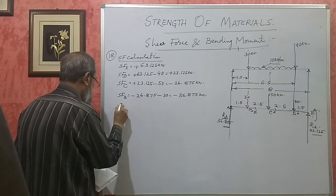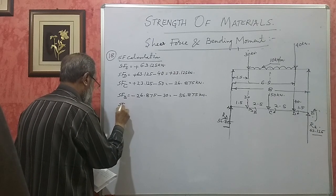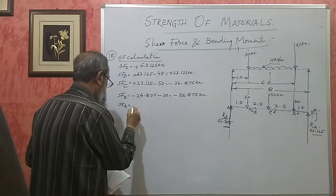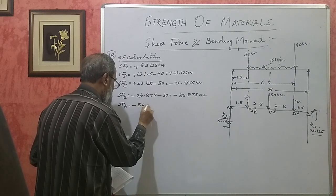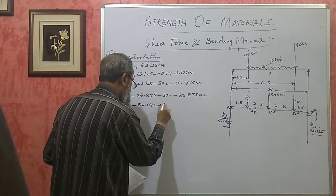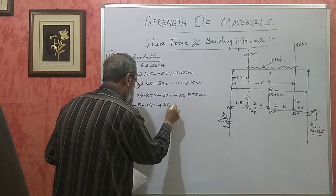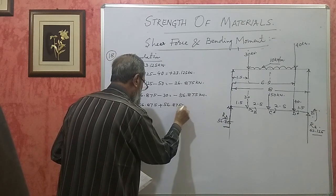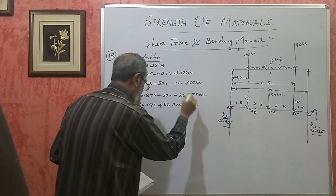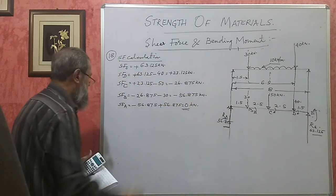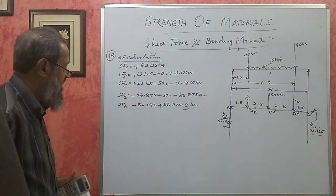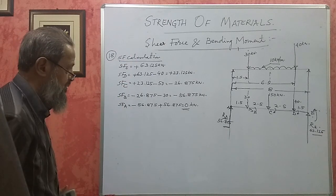SF at A = minus 56.875 plus 56.875 = 0 kilonewton. Getting zero confirms the problem has been done correctly. This completes the shear force calculation.